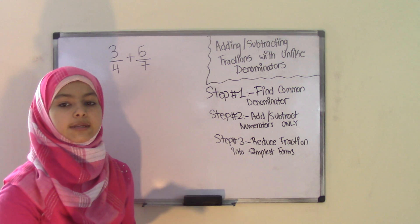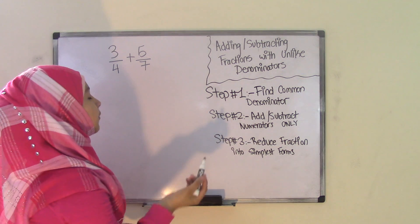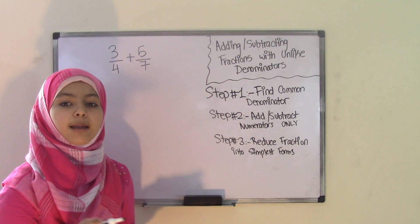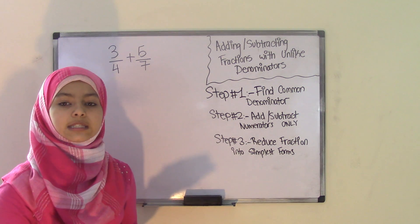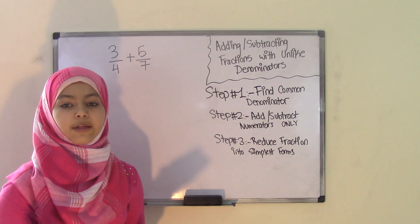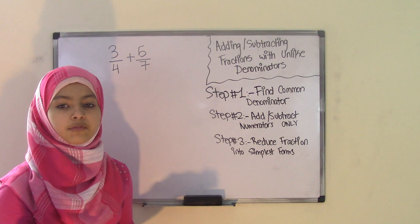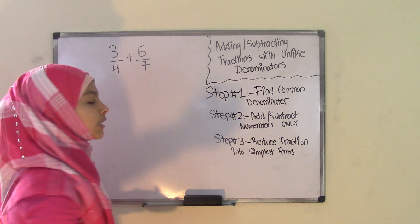Now, how do you find a common denominator when the denominators are different? Well, you do that by using the LCM, or the least common multiple method. Now, how do you find the LCM of two numbers? Let's find out.